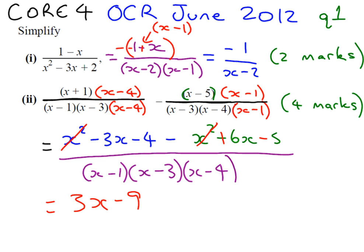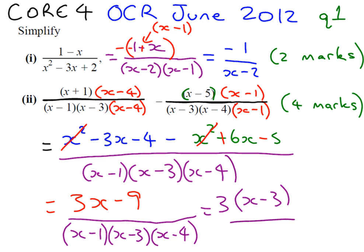Now we need to check if that will factorize, because if it will, we can cancel out and simplify some more. So if we see on the top of our fraction that we can factorize into 3 times by x minus 3, we will notice that the factor x minus 3 is going to cancel. And we get our final answer of 3 over x minus 1 times by x minus 4.